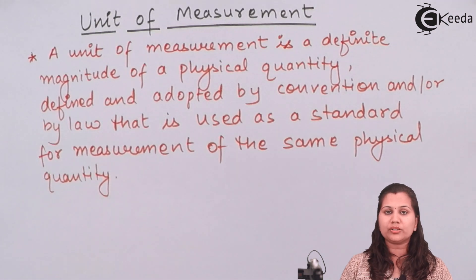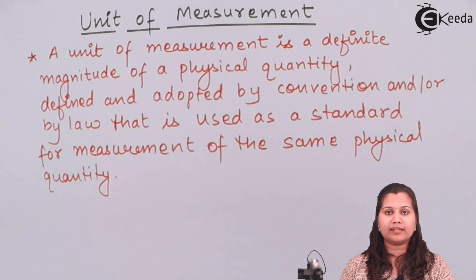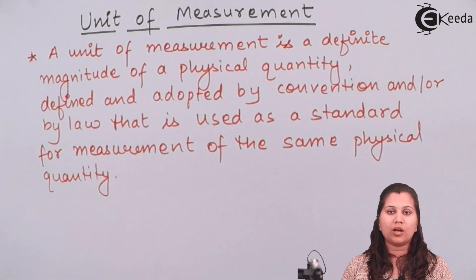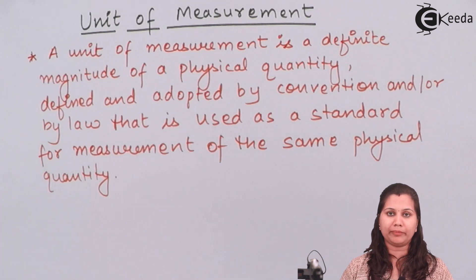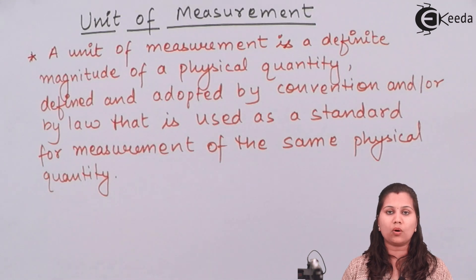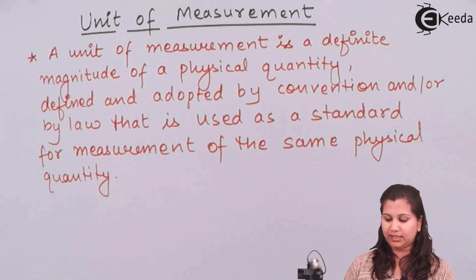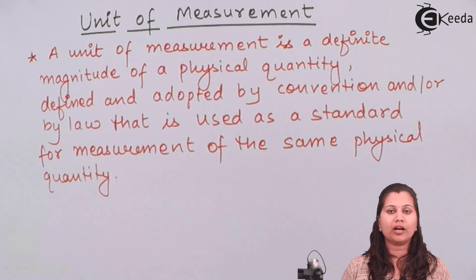When we are doing any measurement, we express the result of the measurement in the form of two parts. One is the number and the second is the unit of measurement. So here we are going to study what is called the unit of measurement.